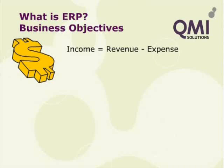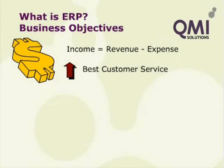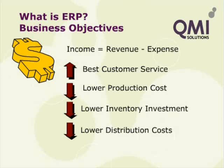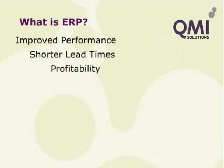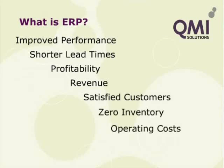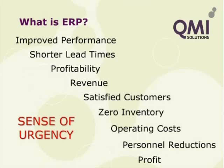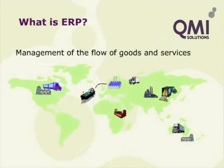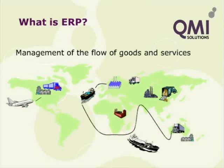ERP stands for Enterprise Resource Planning. To understand what an ERP system is, let's look at the business objective. The high level objective for a business is to increase its net income, with net income equaling revenue from sales less the expenses incurred on those sales. To increase net income, businesses can improve customer service to attract more customers and create loyalty among existing ones, lower production costs through better utilisation of existing resources, lower inventory costs through better management of inventory cycles, and decrease distribution costs using smarter and more efficient ways of distribution. To help achieve all these objectives, an ERP system is a powerful tool that can harness the synergies of technology and sound business processes in a common platform.